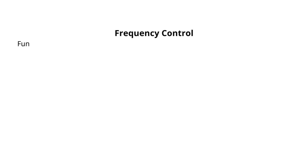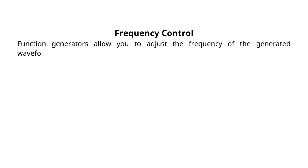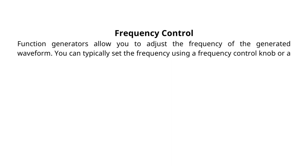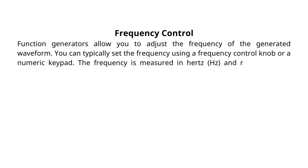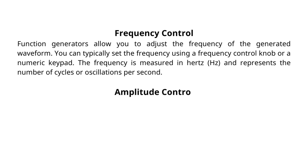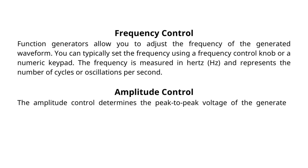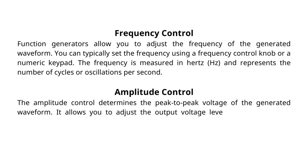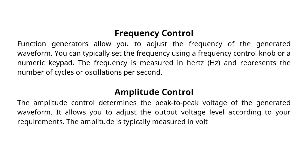Frequency control: function generators allow you to adjust the frequency of the generated waveform. You can typically set the frequency using a frequency control knob or a numeric keypad. The frequency is measured in Hertz (Hz) and represents the number of cycles or oscillations per second. Amplitude control: the amplitude control determines the peak-to-peak voltage of the generated waveform, allowing you to adjust the output voltage level according to your requirements. The amplitude is typically measured in volts (V).